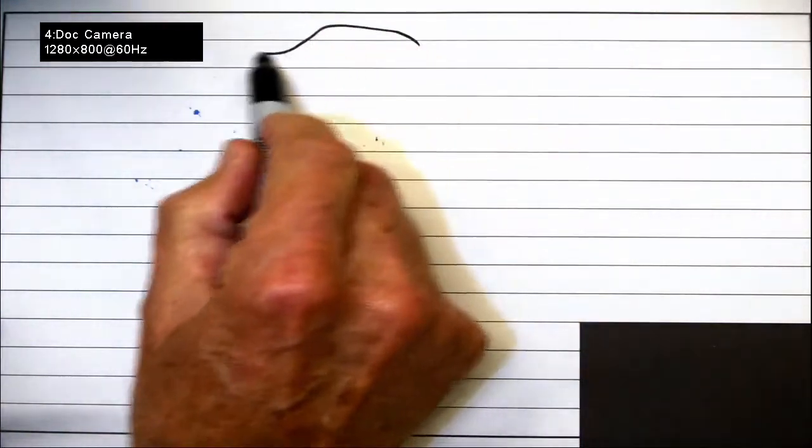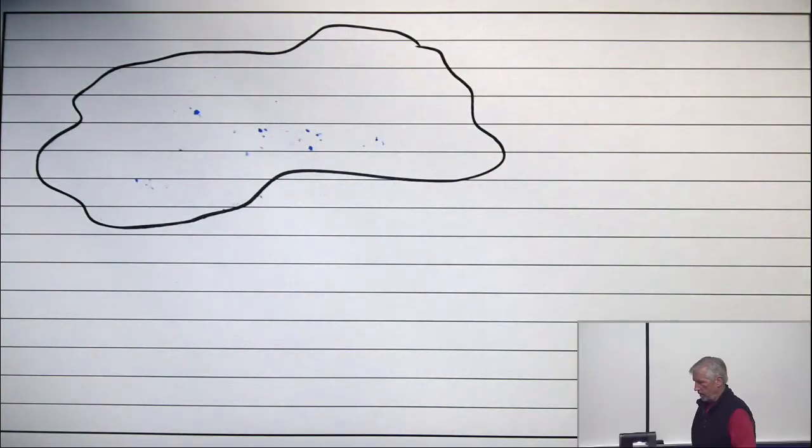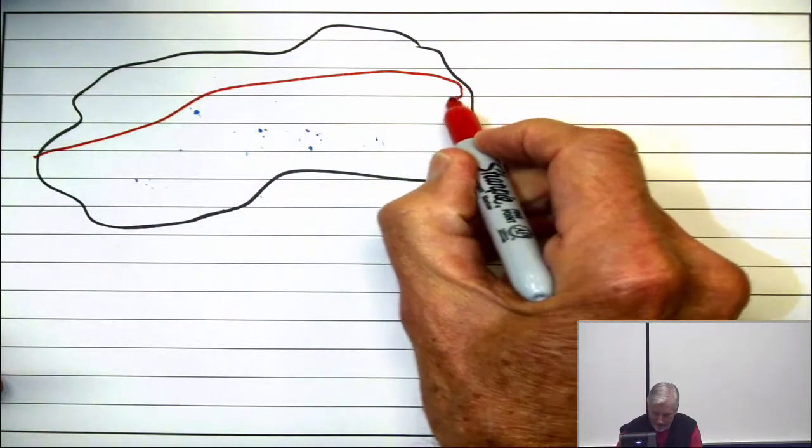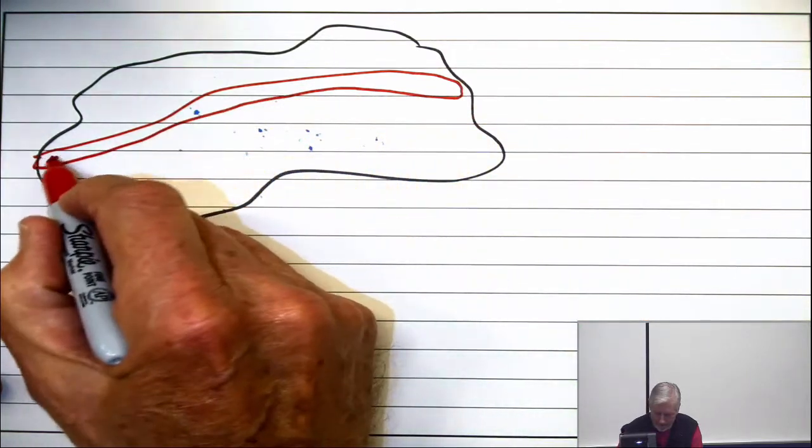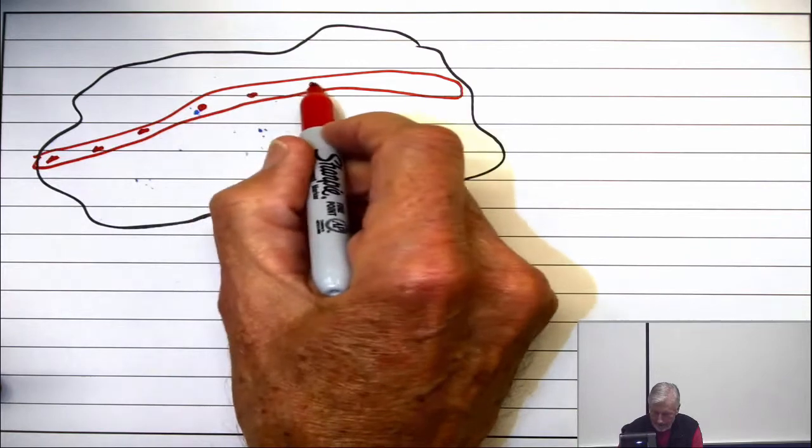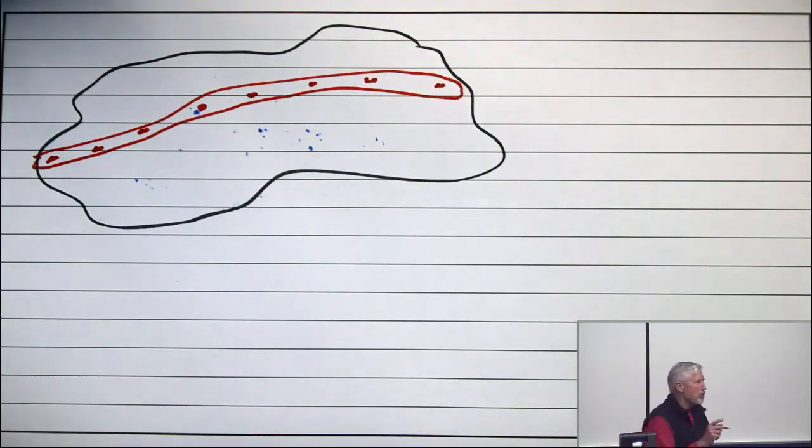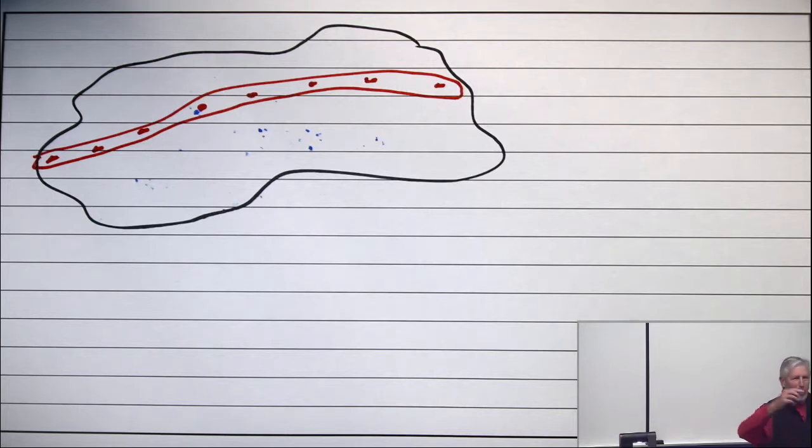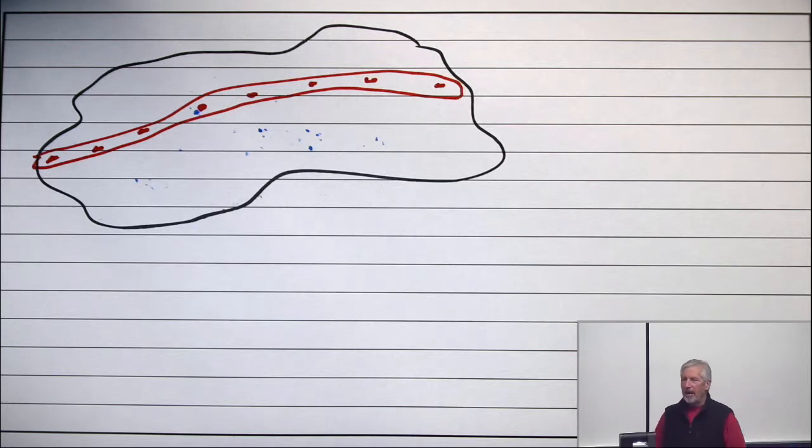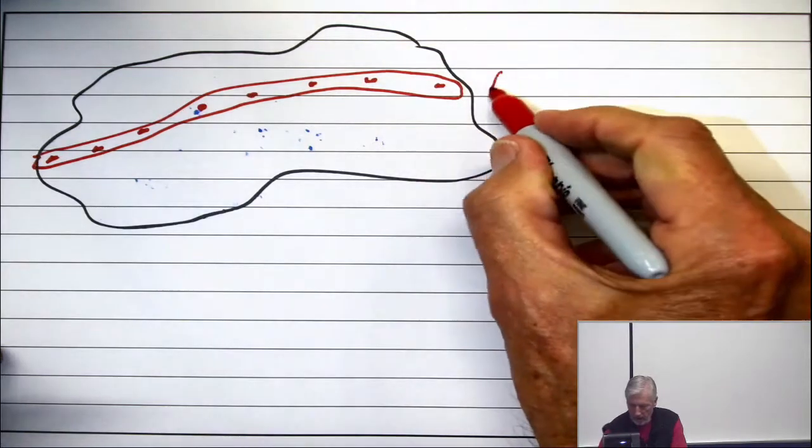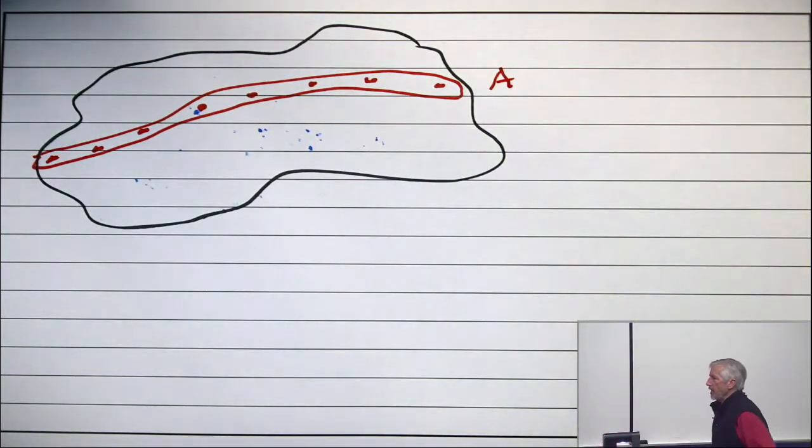All right, so what this means if your poset looks like this, being very suggestive with this picture. Now, a maximal anti-chain looks like this. Now, this picture can only be suggestive because you've already seen concrete examples in which anti-chains were all over the map. They didn't really look that flat, did they? And so this picture is suggestive. All right, now take any element which is not in this maximal anti-chain. Why is it not in the maximal anti-chain?